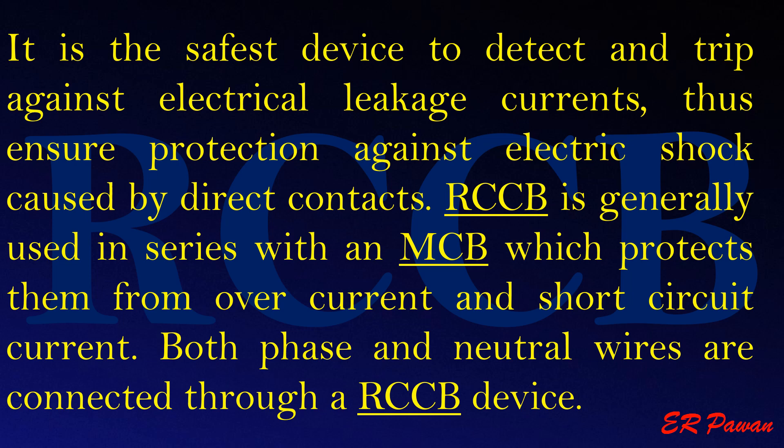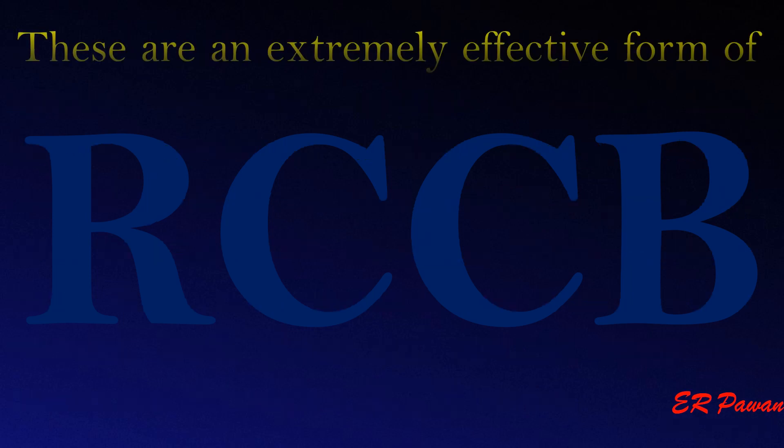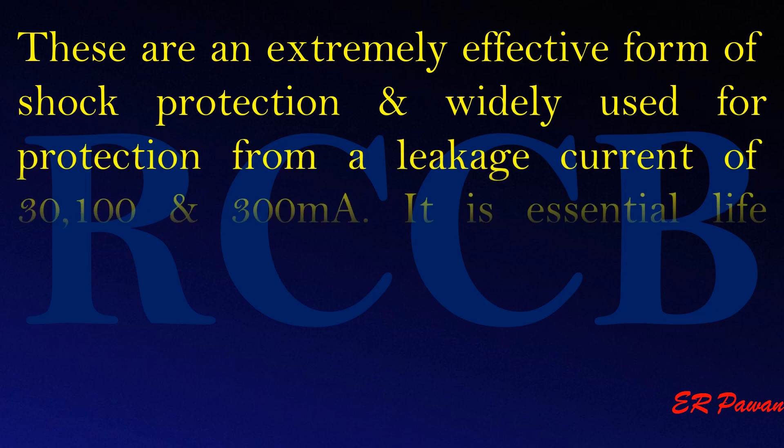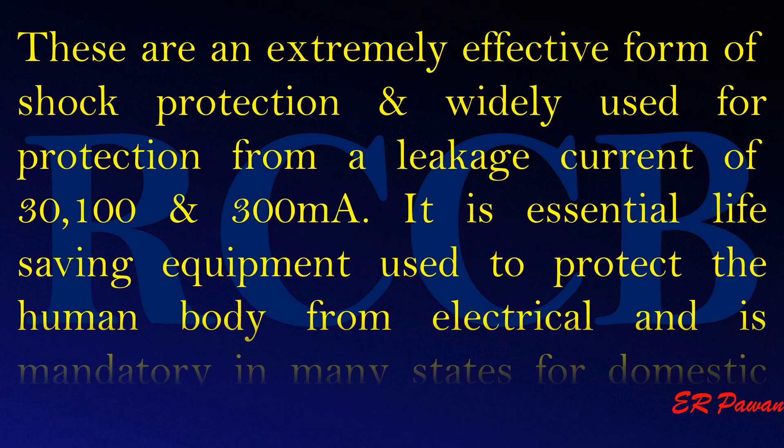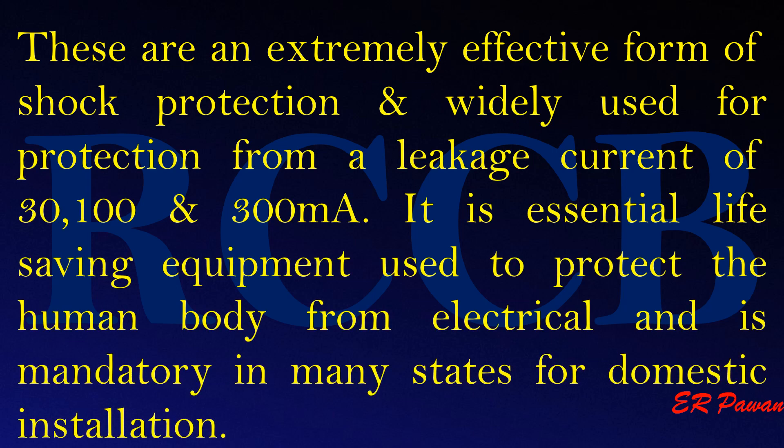RCCB is generally used in series with an MCB, which protects against overcurrent and short circuit current. Both phase and neutral wires are connected through an RCCB device. It is an extremely effective form of shock protection, widely used for protection from leakage currents of 30, 100, or 300 milliamperes. It is essential life-saving equipment and is mandatory in many states for domestic installations.